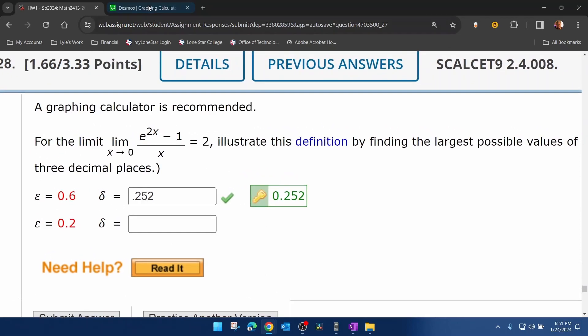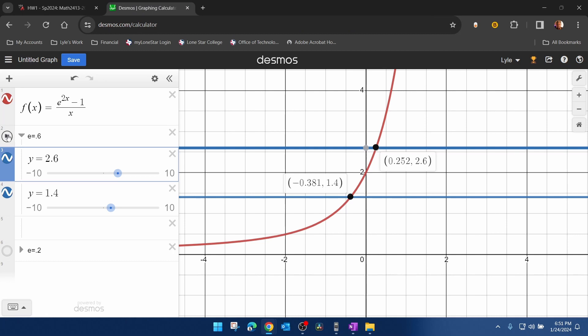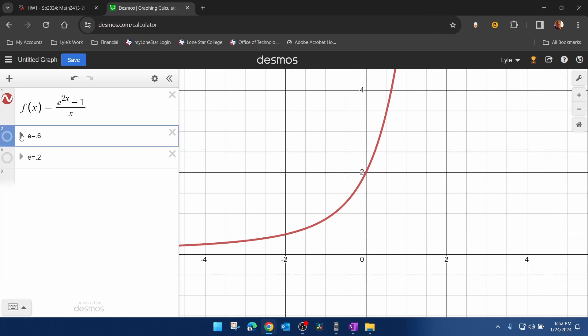So let's go back to Desmos. We're going to turn that folder off. And now we're going to look at being 0.2 away from our limit. Again, those y values would be 0.2 units above and below 2 corresponding to y equals 2.2 and 1.8.